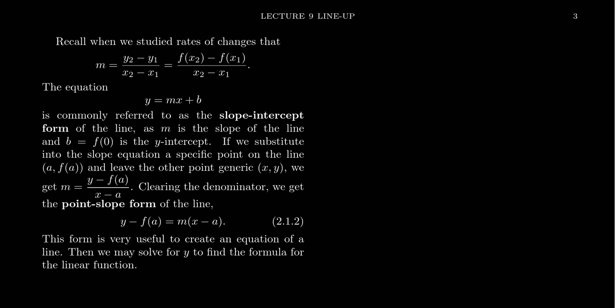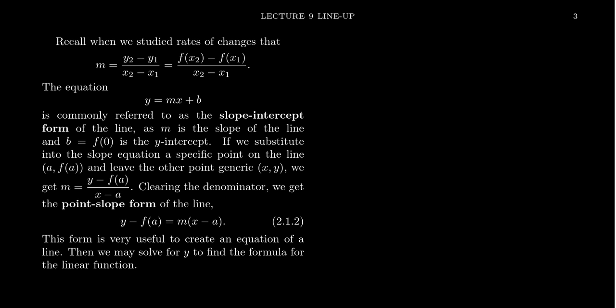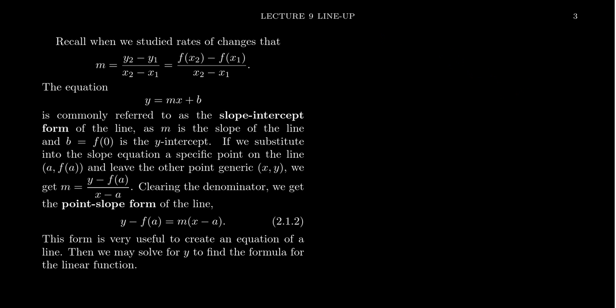In chapter one, when we talked about average rates of change, we talked a lot about slope. Because if you have some function, the average rate of change is trying to approximate the function using a straight line, this so-called secant line. The thing about linear functions is that their average rates of change are always constant, and that constant value is the slope of the function, which we compute by the usual formula — rise over run.